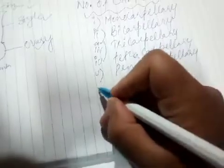If the flower has one carpel, it is called monocarpillary. The condition with two carpels is called bicarpillary. If the flower is tricarpillary, it has three carpels. If the flower is tetracarpillary, it has four carpels. If there are more than four carpels, the condition is called multicarpillary.